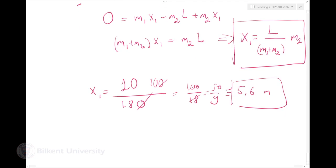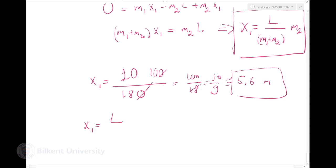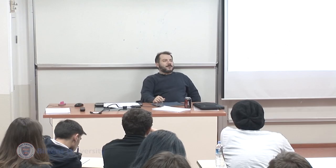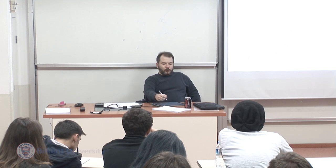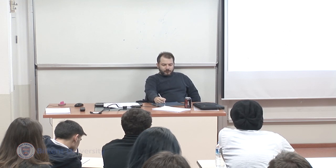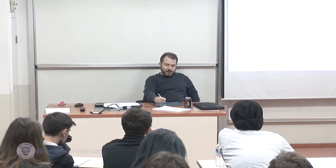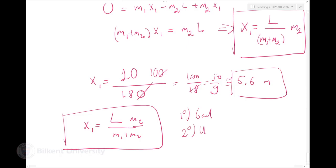Looking at the result: x1 = L·M2/(M1+M2). The units work out — M2 over (M1+M2) is dimensionless, so we're left with L in meters. Checking limits: if M2 is infinite, the car doesn't move, so I should have walked the full L meters. And indeed, as M2 → ∞, L·M2/(M1+M2) → L.